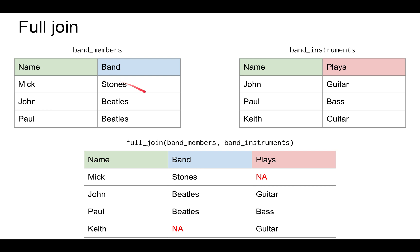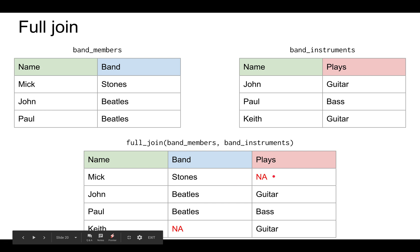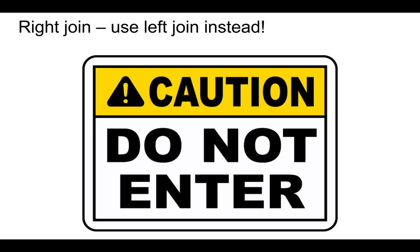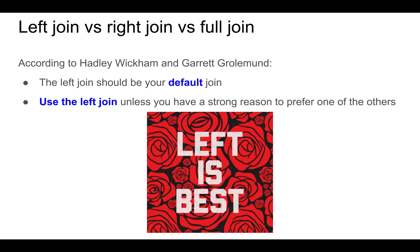A full join keeps every observation and puts in NA for those missing values — so Mick does not play anything that we know of, and Keith is not in any band that we know of. A left join keeps only the observations in band members and puts NA for values that are not observed in the second table. As for a right join, you shouldn't use it — as advised by Hadley Wickham and Garrett Grolemund, they advise you to use a left join by default unless you have a very strong reason to prefer one of the others. Basically, don't use the right join; usually the left join is the one that you want.